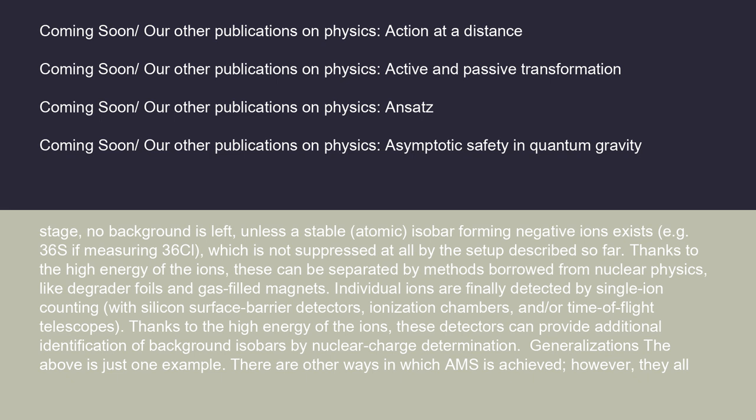After this stage, no background is left unless a stable atomic isobar-forming negative ion exists — e.g. 36S if measuring 36Cl — which is not suppressed at all by the setup described so far. The ions are finally detected by single ion counting, with silicon surface barrier detectors, ionization chambers, and/or time-of-flight telescopes.